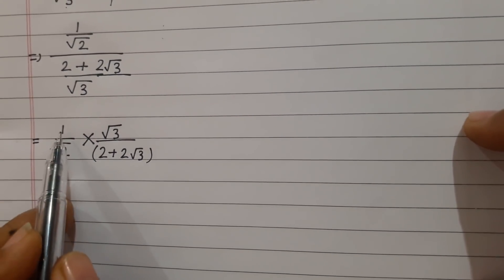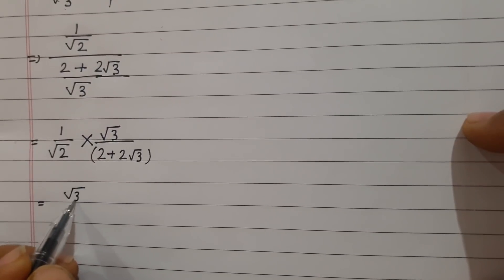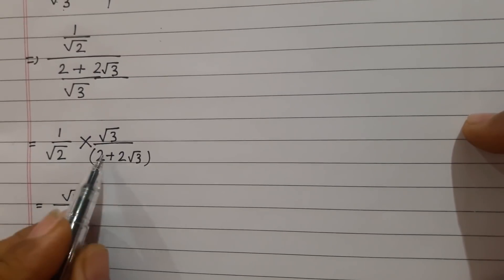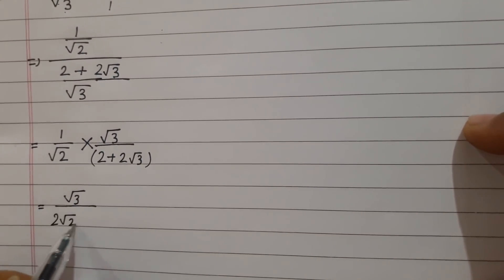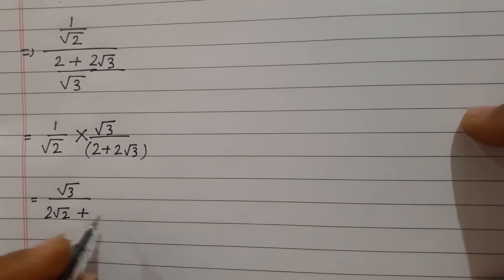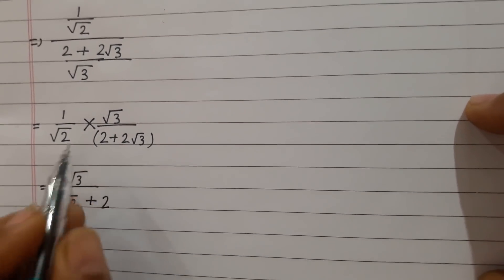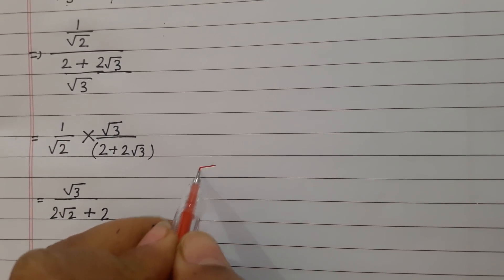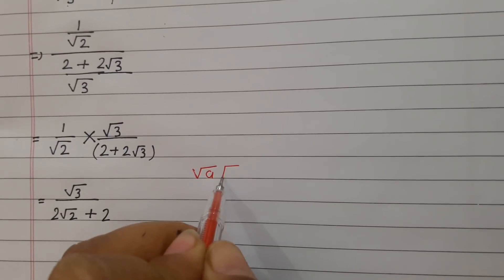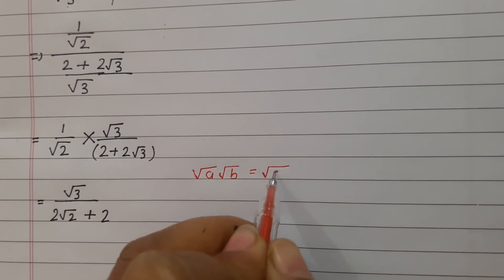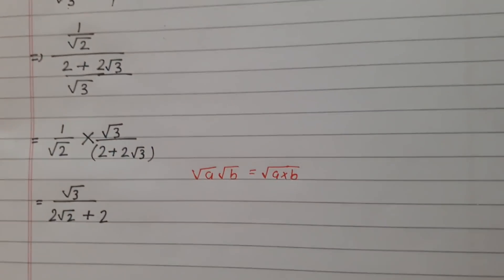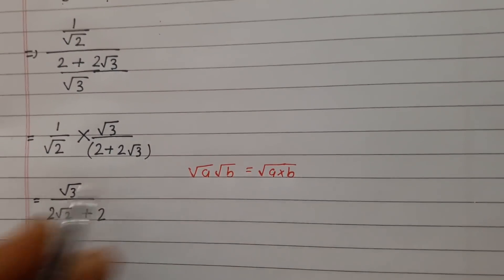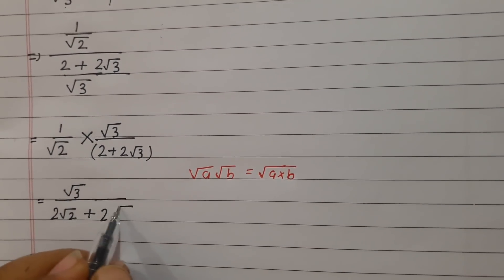Now we will solve it. 1 into root 3 is root 3. We will multiply root 2 from this: plus 2 into root 2 is 2 root 2, plus 2 root 3 into root 2. Using the identity under root A into under root B equals under root AB, root 2 into root 3 gives us root 6.